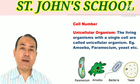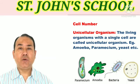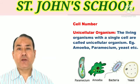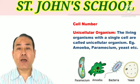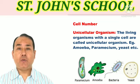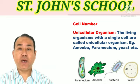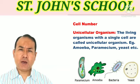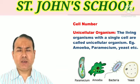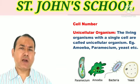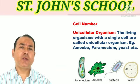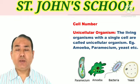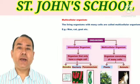Examples of unicellular organisms include Amoeba — you can see it on the diagram on my left side — Paramecium, Chlamydomonas, and Yeast, which is very common. These are all names of unicellular organisms.